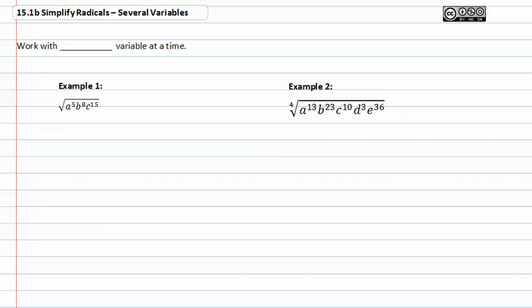In this video, we're going to work with several variables instead of just one under a radical sign. When working with several variables, you always want to work with one variable at a time and not get overwhelmed with the fact that there's multiple variables under the radical.